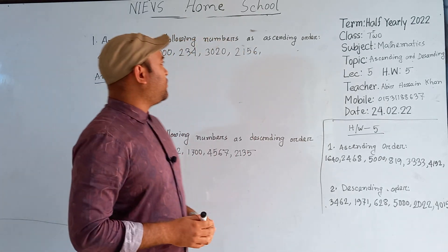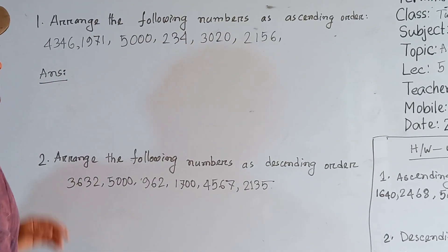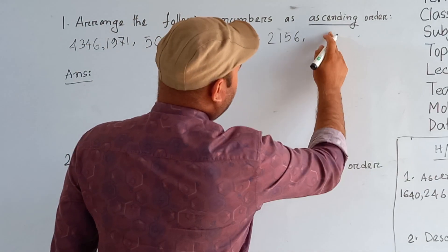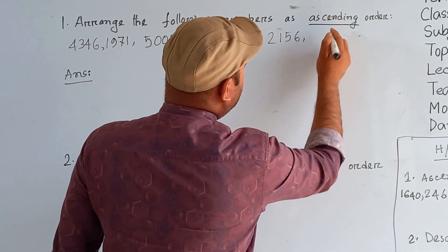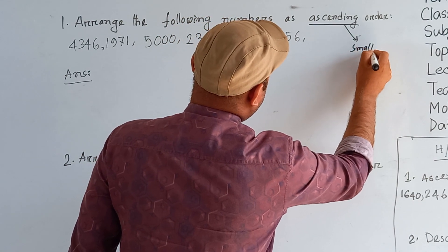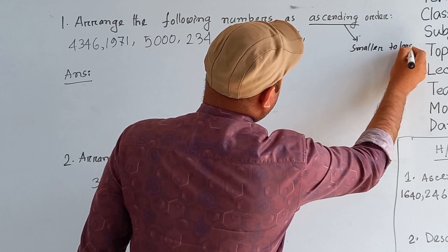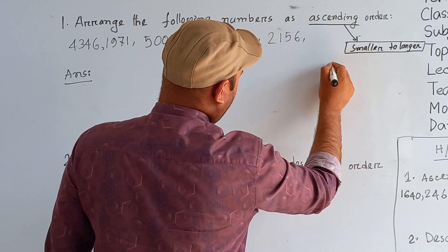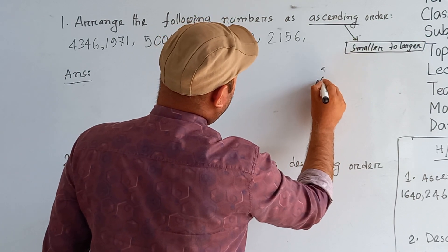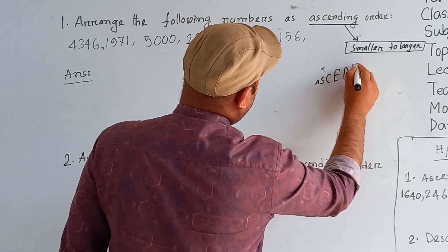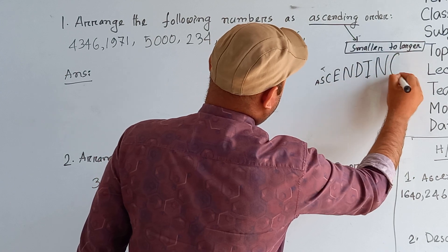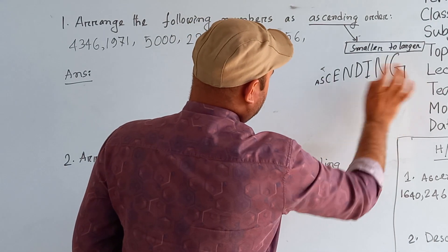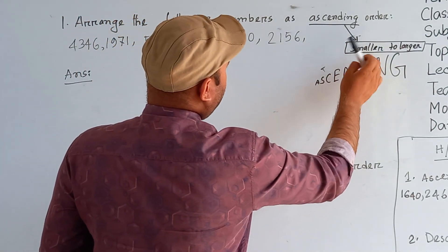Let's start our class. Look at question number 1: arrange the following numbers in ascending order. First of all, we have to know what ascending order means. Ascending order means you arrange numbers from smaller to larger. Just like the alphabet, 'A' is the smallest and 'Z' is the biggest — so ascending order goes from smaller to larger.